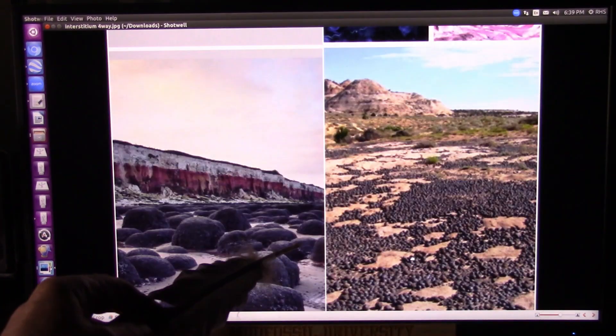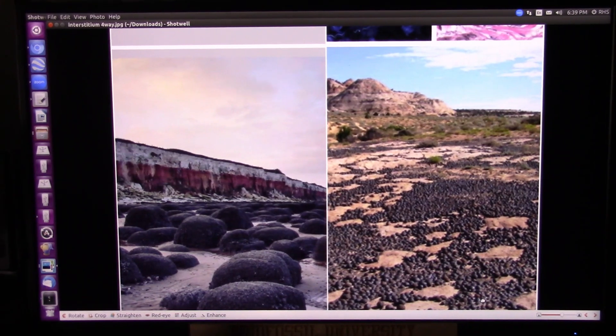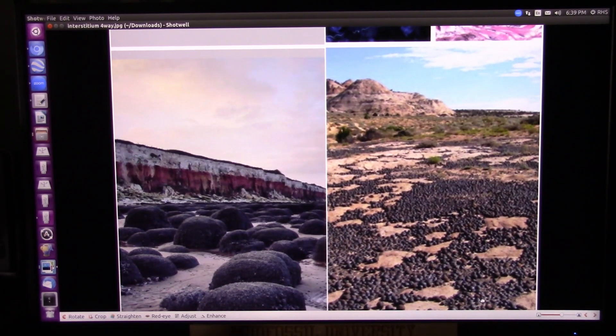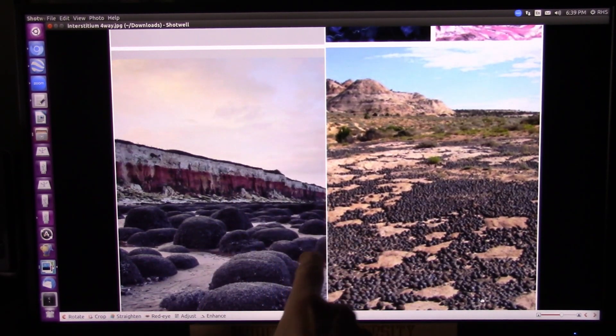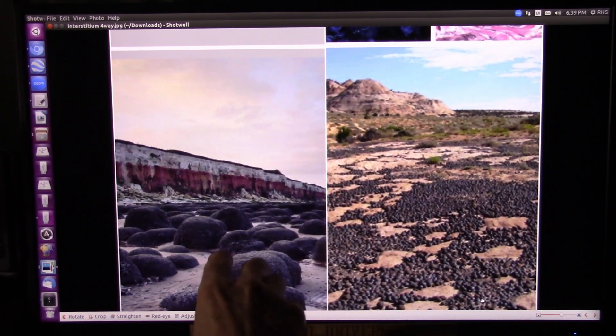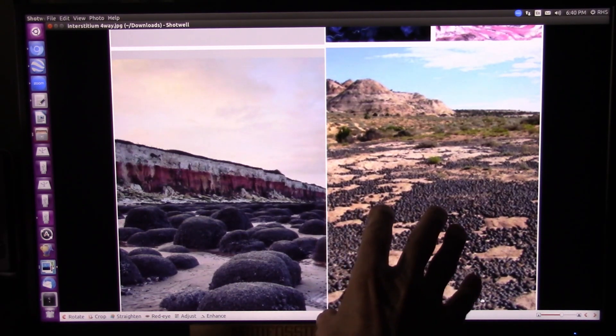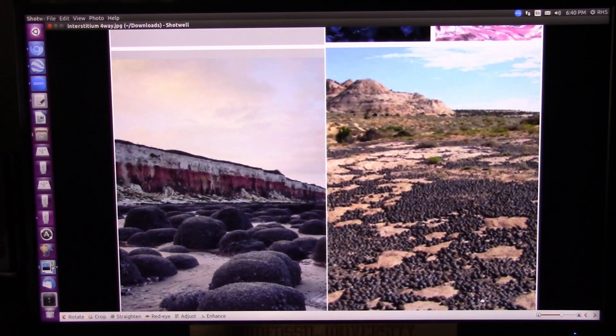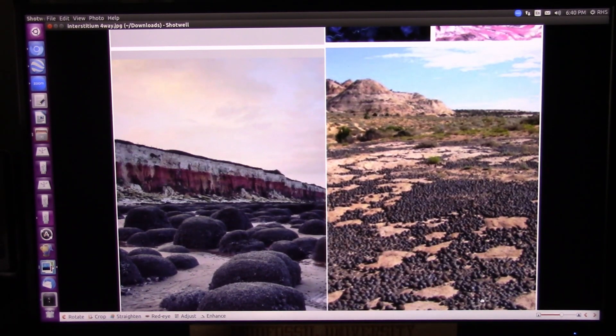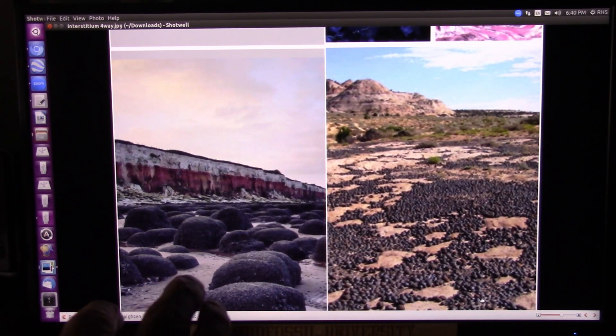These are what they call the Moki marbles, same things. And guess what? They're on Mars too. And I believe they're also on the Moon. Now these can turn into glass, they can turn into all kinds of different substances. Primarily though they stay with the black. Primarily this is what they look like. On Mars they call them the Mars blueberries. They look basically the same only they're more blue. But it's the same chemistry.